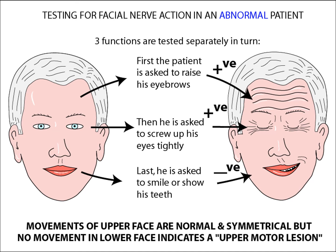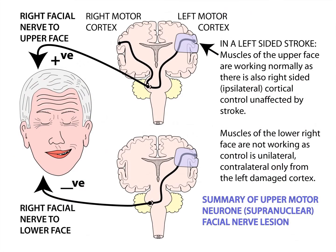If however the upper face seems perfectly normal but activity is lost in the lower face — for example the patient may not be able to smile or show teeth — then we're dealing with an upper motor neuron lesion such as a stroke. In the presence of a stroke on the left side, the right motor cortex also controls the upper face, giving normal upper face activity. In the lower face the control is unilateral and contralateral, so we lose activity on the opposite side. This is an upper motor neuron supranuclear facial nerve lesion involving the lower face but not the upper face, because the upper face is supplied bilaterally.